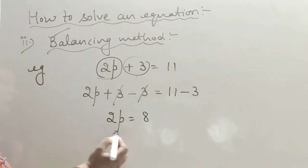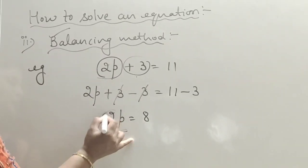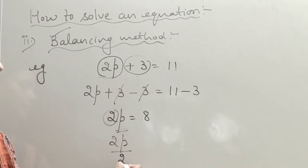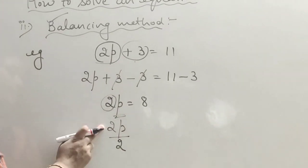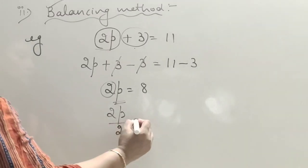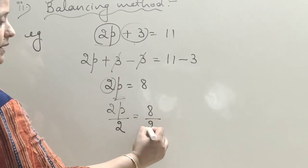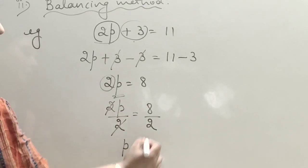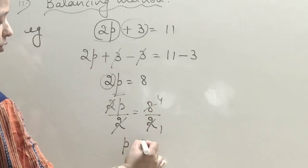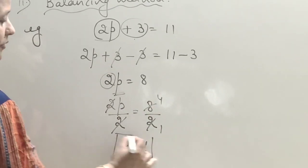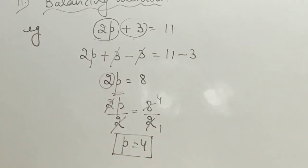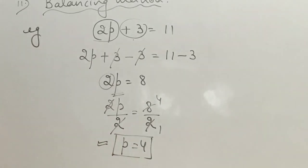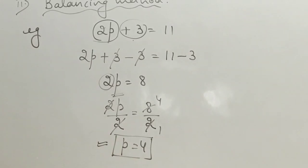Now we need the value of p. Since p is multiplied by 2, we divide both sides by 2. The 2 cancels on the left, giving p equals 4. By this balancing method, we can solve the equation, and p equals 4 is the solution.